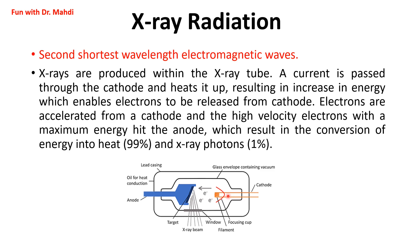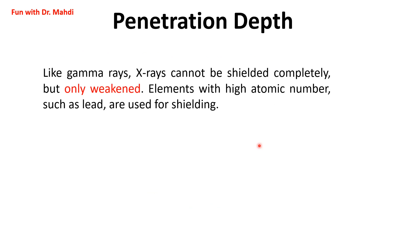Heating the cathode increases the energy of electrons, enabling them to be released from the cathode. These electrons are then accelerated toward the anode at high velocity and hit it, resulting in the conversion of energy into heat and X-rays — 99% heat and 1% X-ray. Like gamma, X-rays cannot be shielded completely, but can only be weakened. Elements with high atomic numbers, such as lead, are used for shielding.